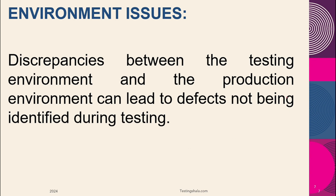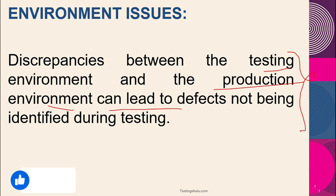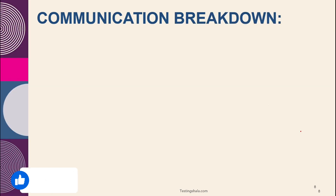The next reason is environmental issues, which also lead to missing certain defects. This includes discrepancies between the testing environment and the production environment that the customer is using — even that situation can create challenges of missing defects. It is always good advice to try to mimic or replicate the production environment, which would solve these environmental issues.